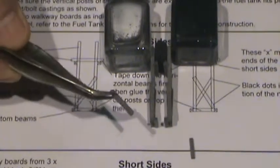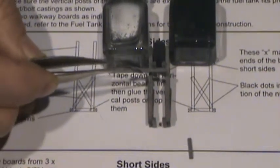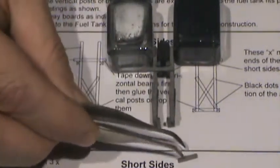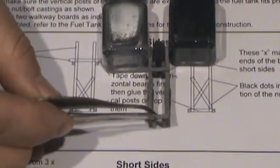Once you're happy with the alignment, take your short side pieces, put a couple of dabs of glue where appropriate, and place the boards in position on the frame.